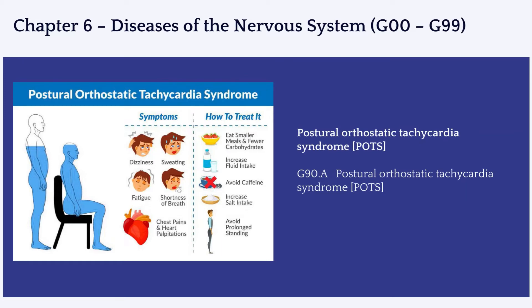One additional code updated in chapter 6 is for postural orthostatic tachycardia syndrome, otherwise referred to as POTS. Historically, POTS did not have its own unique code in ICD-10-CM. It was listed as a synonym under code I49.8 for other specified cardiac arrhythmias, along with many other medical conditions like Brugada syndrome, reentrant atrioventricular tachycardia, or ectopic rhythm disorders. A new code G90.A has now been introduced specifically for postural orthostatic tachycardia syndrome.